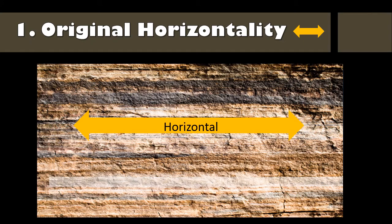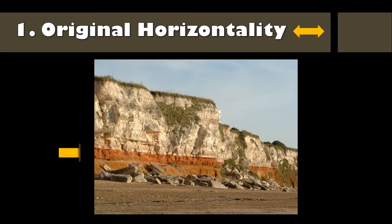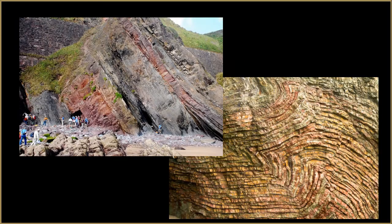The principle of original horizontality states that sediments will usually be laid down in horizontal layers. But the horizontal layers don't always stay that way — they can be thrust up or bent by the activity of Earth's tectonic plates. In most cases, rocks that are not horizontal were thrust up or bent after they were deposited.